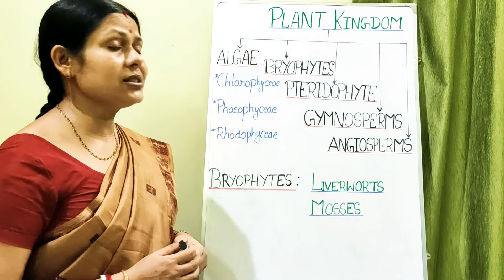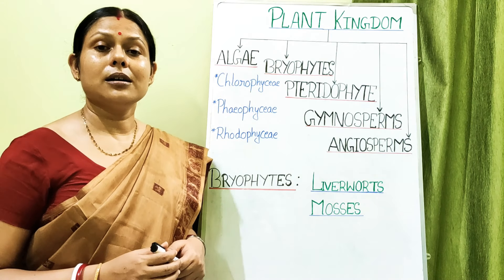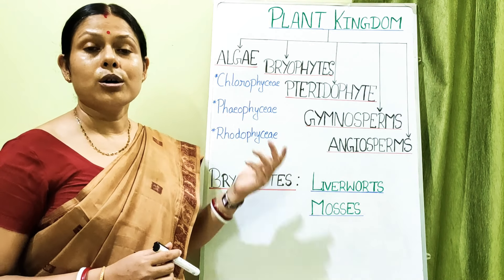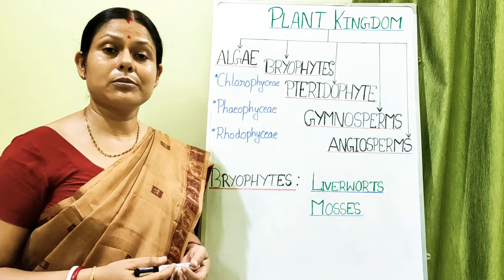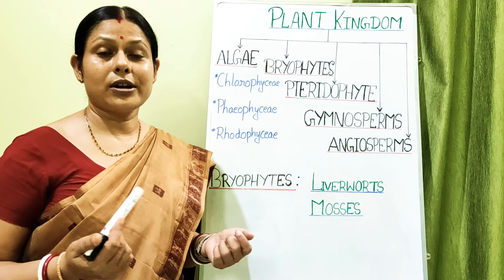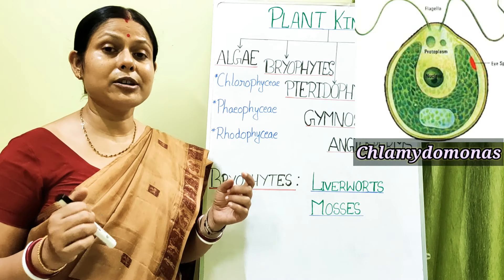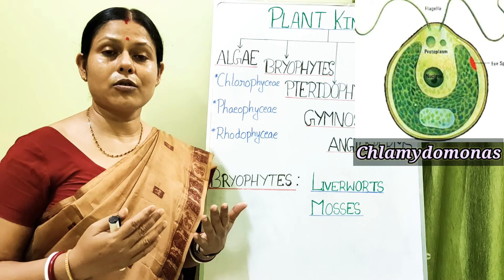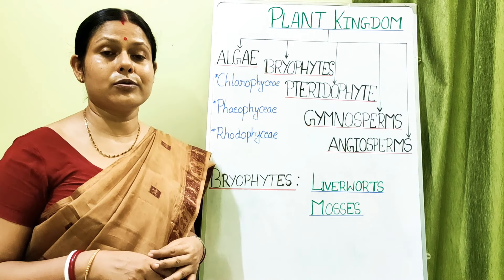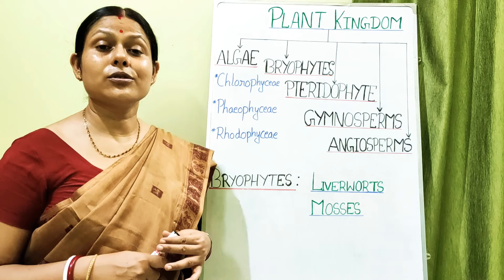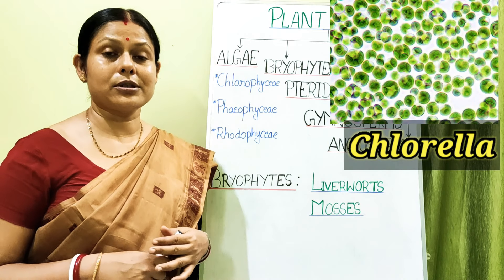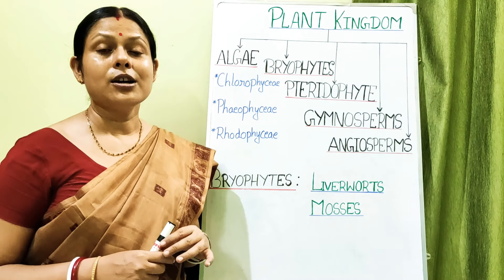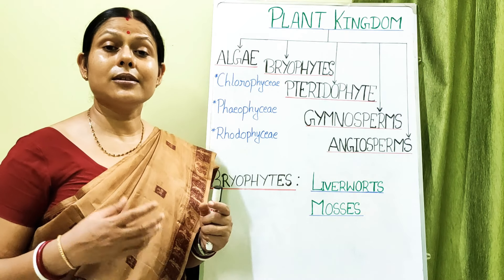Regarding Chlorophycean members, they range from unicellular organisms like Chlamydomonas — which has a flagella and can move — to Chlorella, which is also unicellular but non-motile. There are also filamentous algae among Chlorophycean members, such as Ulothrix and Spirogyra.